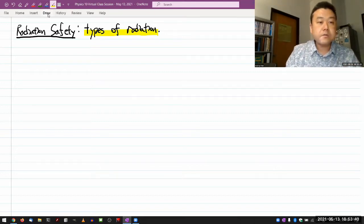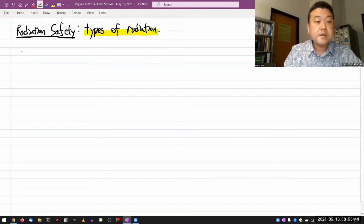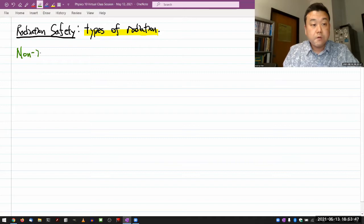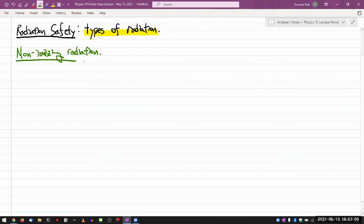I call this Types of Radiation because that's the very first thing you think about. When you think about types of radiation, the very first classification is into these two categories: non-ionizing radiation and ionizing radiation. The biggest category of non-ionizing radiation is what you might call low energy EM wave, electromagnetic wave.